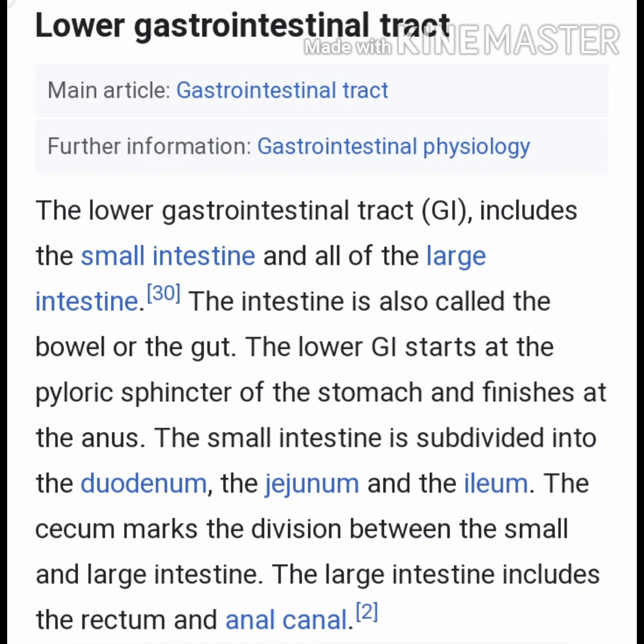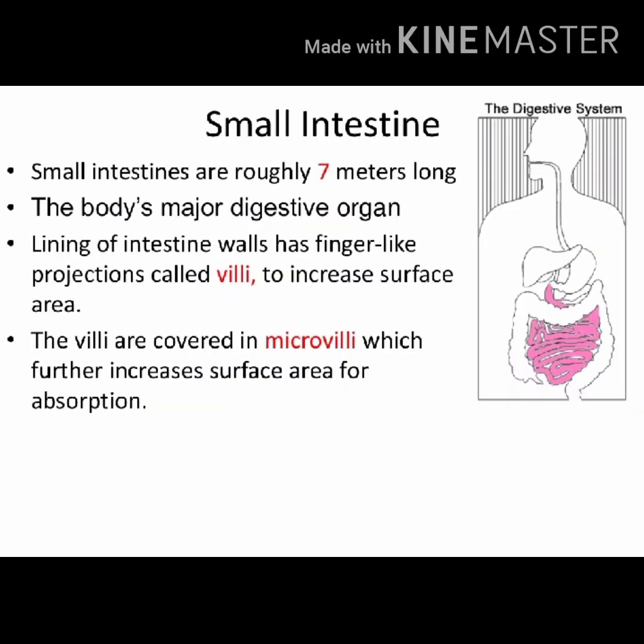The duodenum is behind the pyloric sphincter. The cecum marks the division between the small and large intestine. The large intestine includes the rectum and the anal canal. The small intestine is roughly seven meters in length and is the body's major digestive organ.